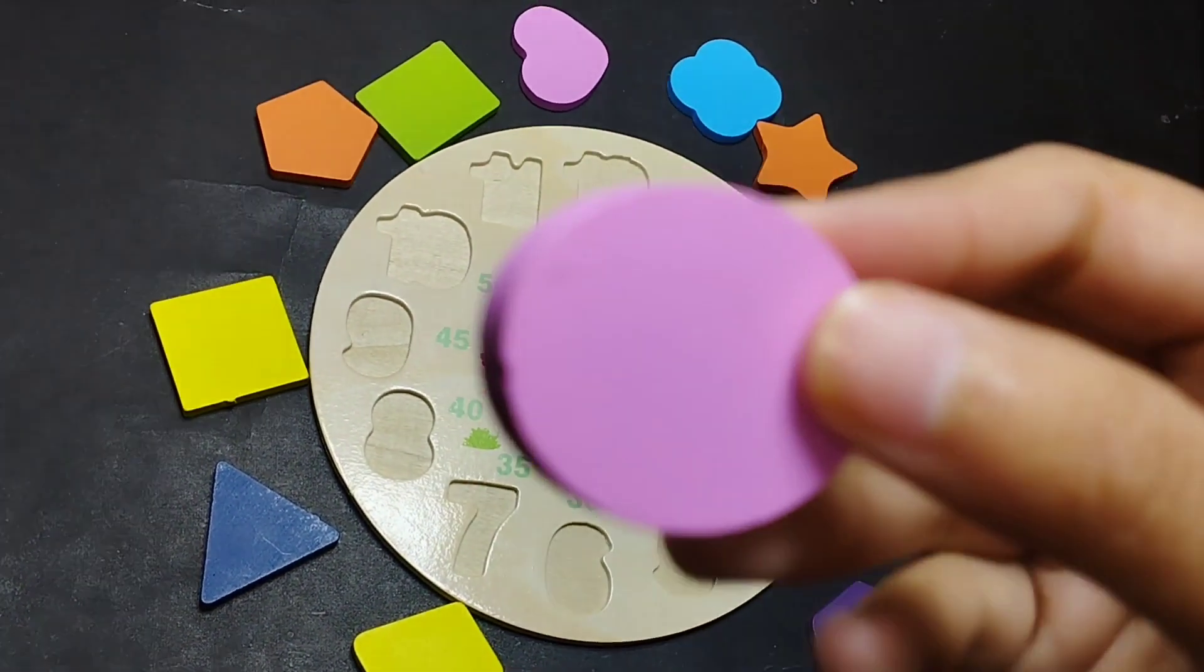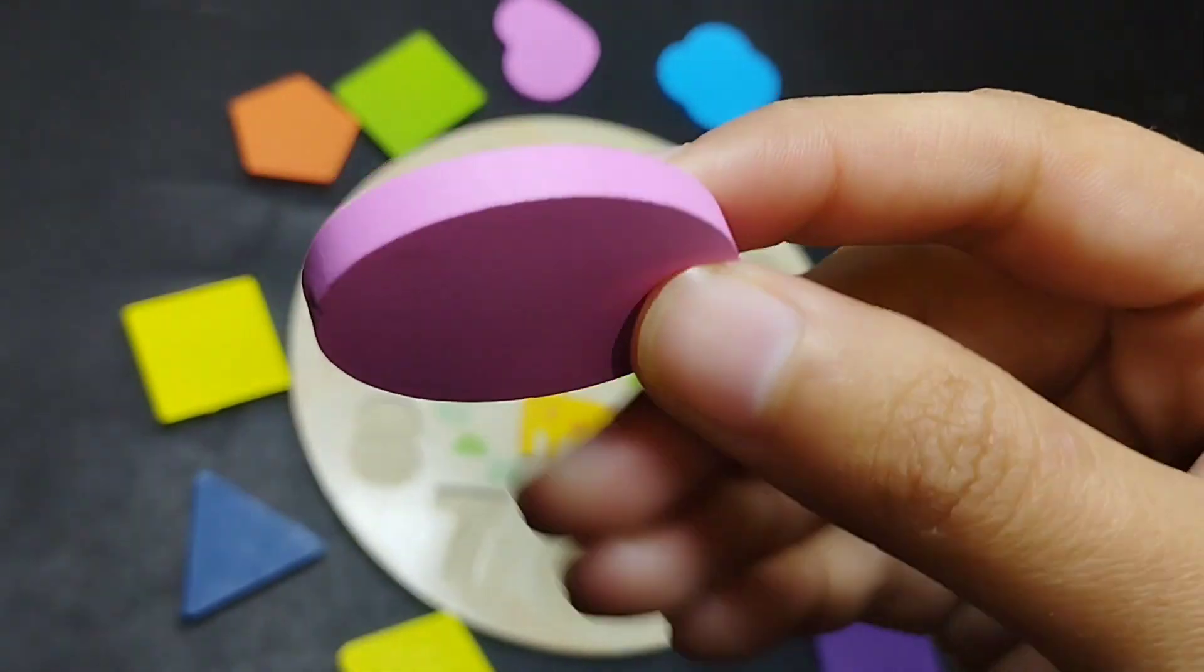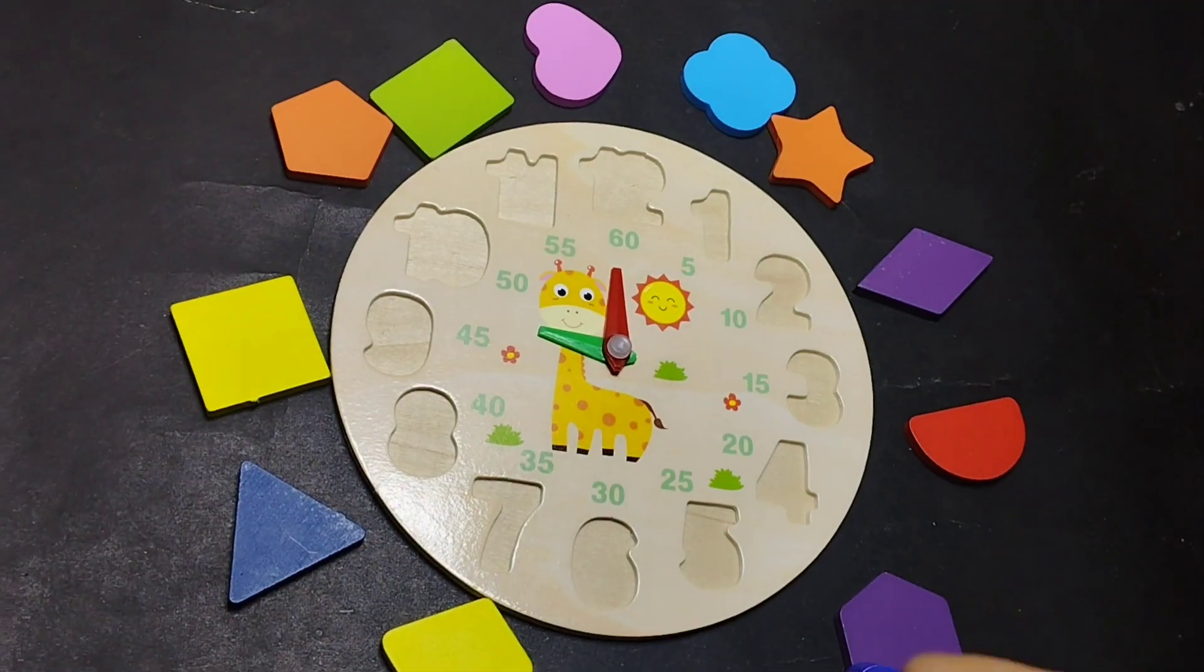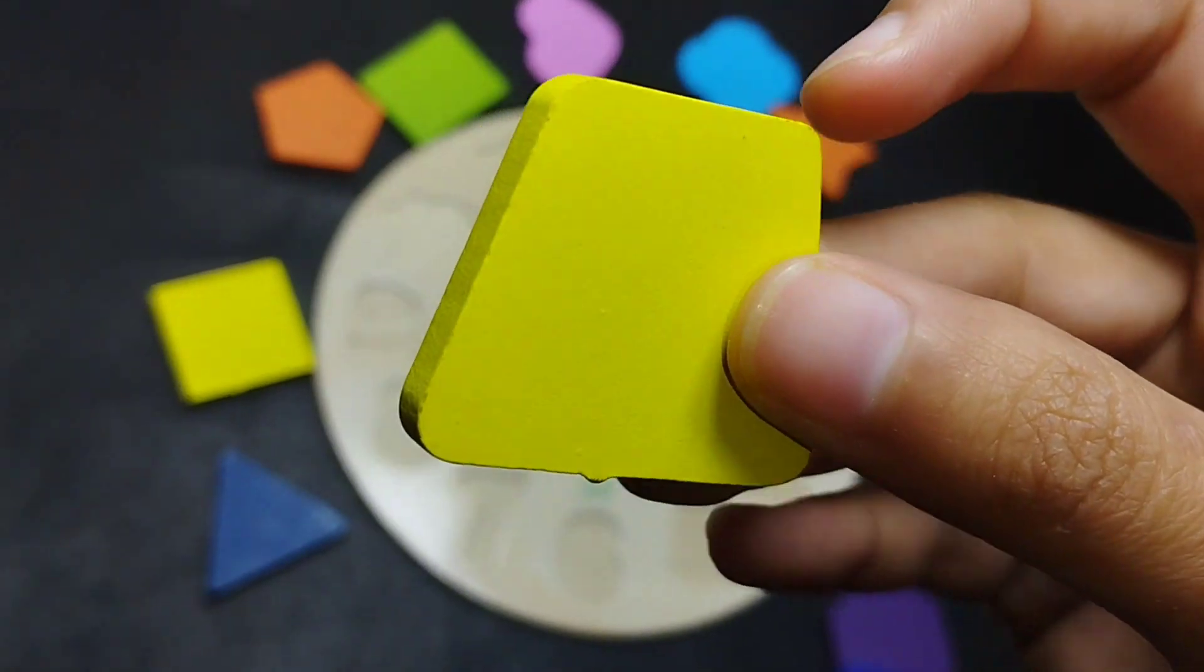Let's learn some shapes names. This is oval shape, oval shape. This is trapezoid, trapezoid.